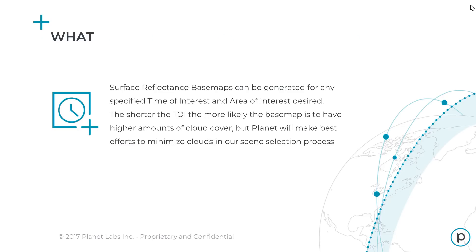Surface reflectance basemaps can be generated for any specified time of interest and area of interest desired. The shorter the TOI, the more likely the basemap is to have higher amounts of cloud cover, but Planet will make best efforts to minimize clouds in our scene selection process.